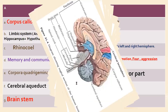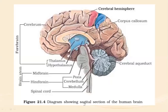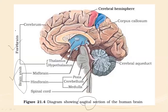If we take the sagittal section of the brain, the two major parts are the forebrain and the brain stem. However, as per NCRT, the most important classification gives three parts: forebrain, midbrain, and hindbrain — where hindbrain falls under the brain stem category.